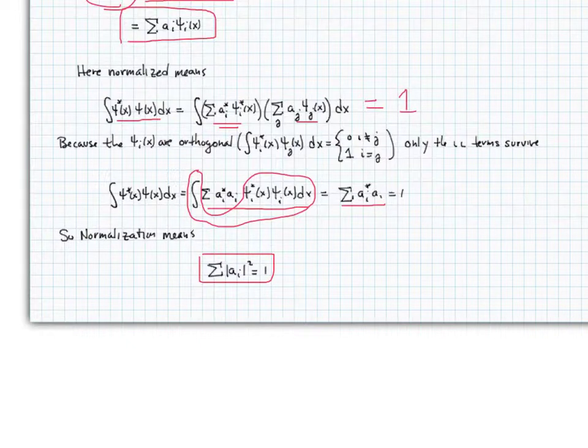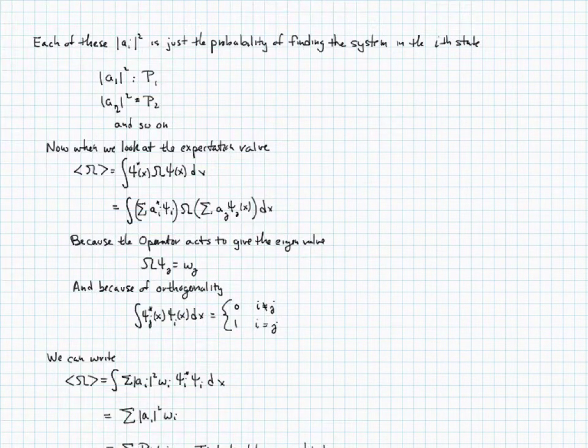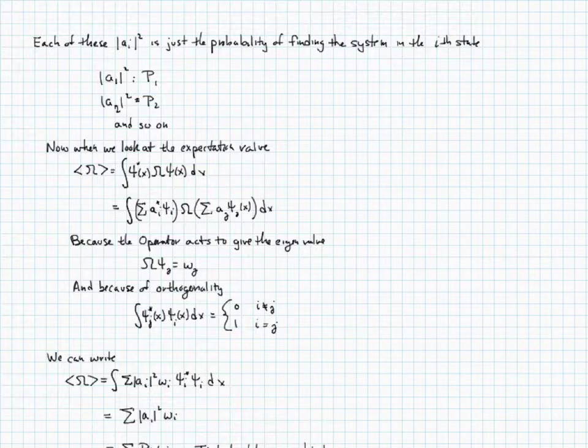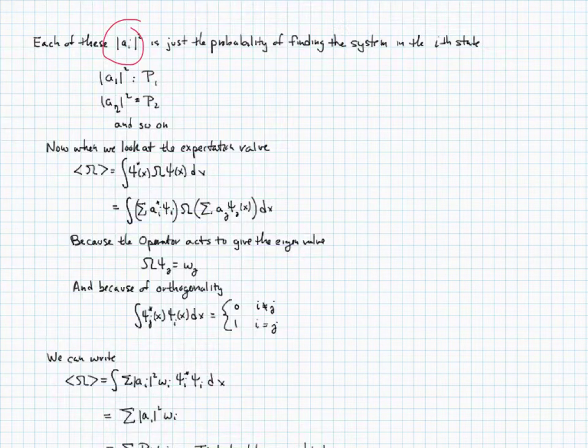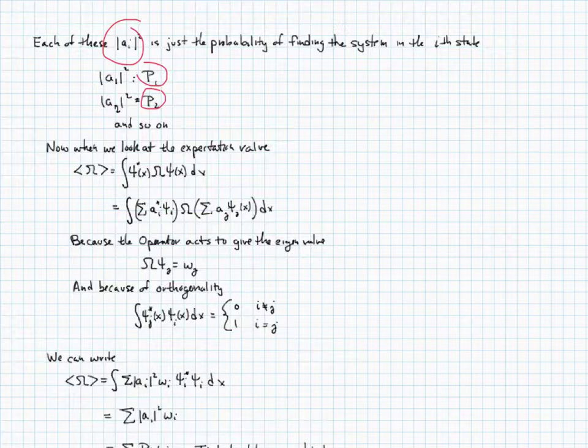That's a nice result. It's going to be really useful for some things in just a moment. One of the nice things is that we can interpret these coefficients as just probabilities. We sum over all the probabilities of finding the system in some allowed state. We should get 1. So we can interpret the square of A1 as just the probability of being in 1. The square of A2 is the probability of being in 2, and so on. So it's really nice.